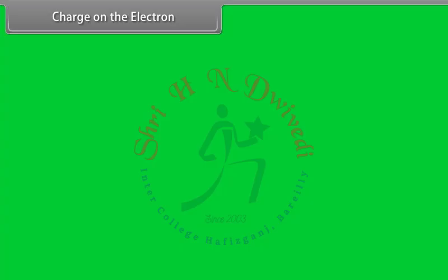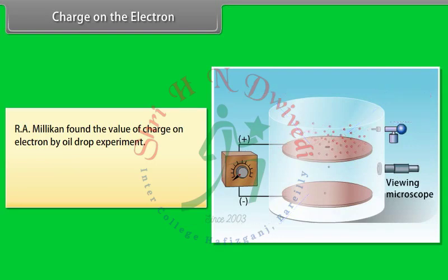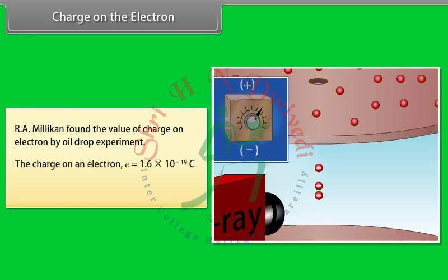Charge on the electron: R.A. Millikan found the value of charge on the electron by the oil drop experiment. Oil droplets enter the apparatus through a small hole and fall between two charged plates. The motion of the droplet is observed with a microscope. The space between the charged plates is irradiated with X-rays, which ionize air molecules. The charge on an electron e is equal to 1.6 × 10⁻¹⁹ coulombs. Mass of the electron me is equal to 9.31 × 10⁻³¹ kilograms.